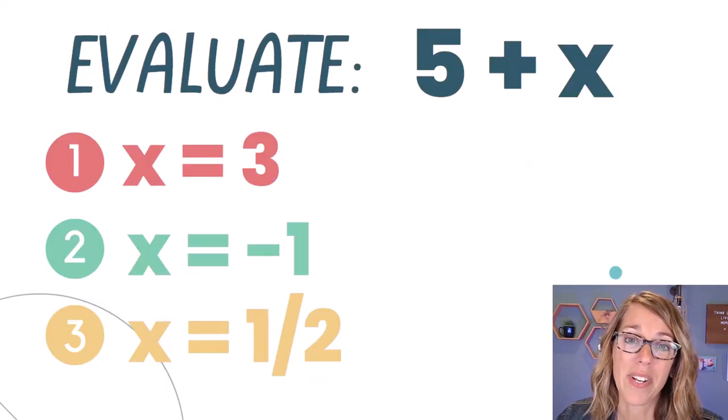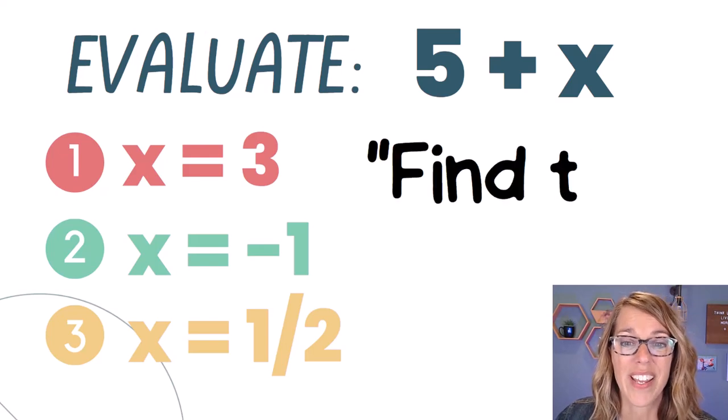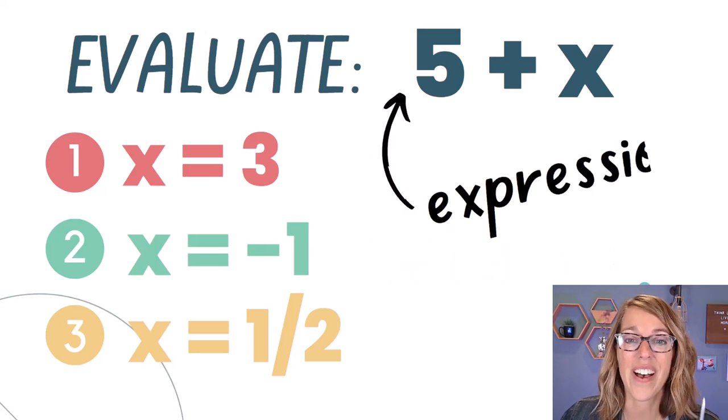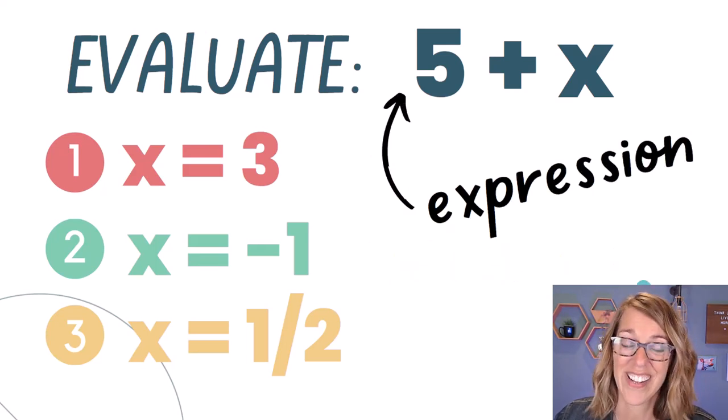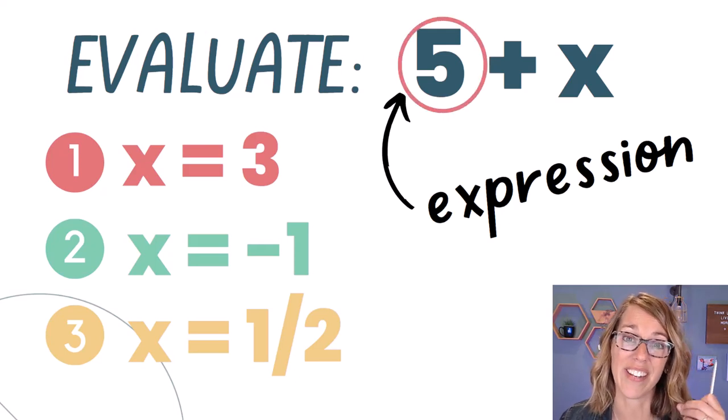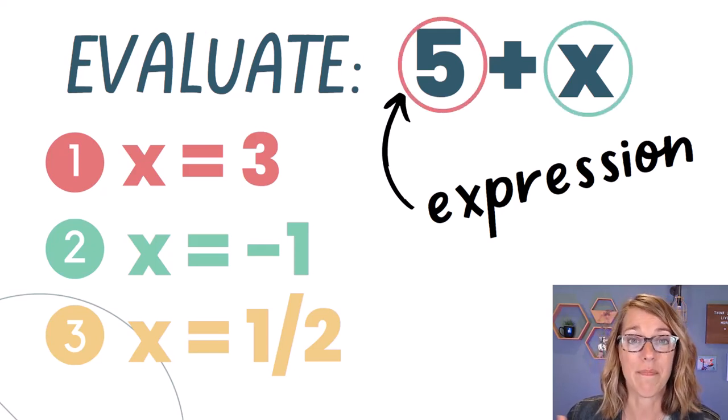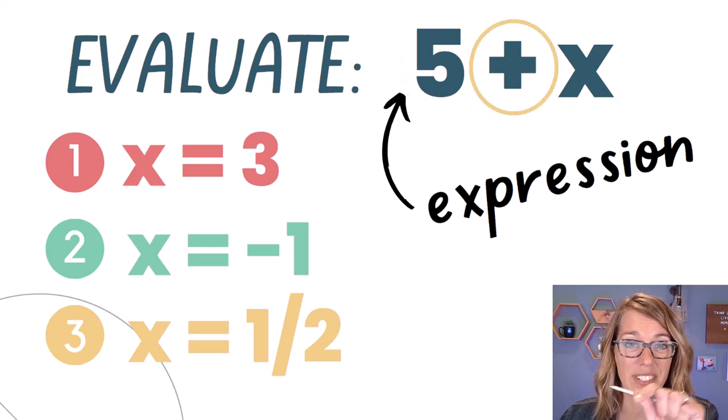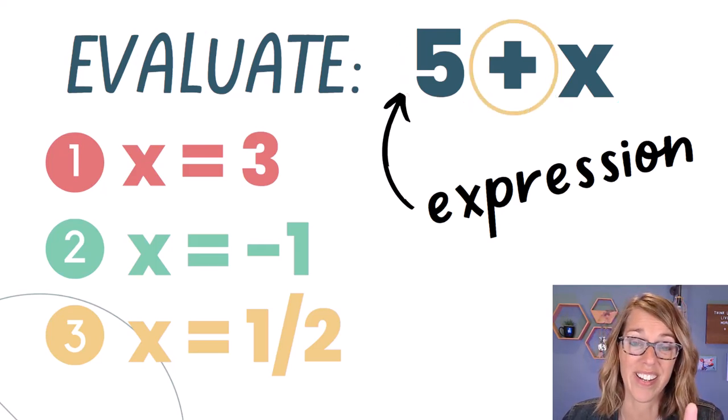So for example, we might want to evaluate 5 + X. Now when we're evaluating, we want to find the value of, and I'm going to find the value of this expression. So an expression is just a collection of numbers and variables and some math operators. In this case, our expression is 5 + X. The key though, is that there is no equal sign here.